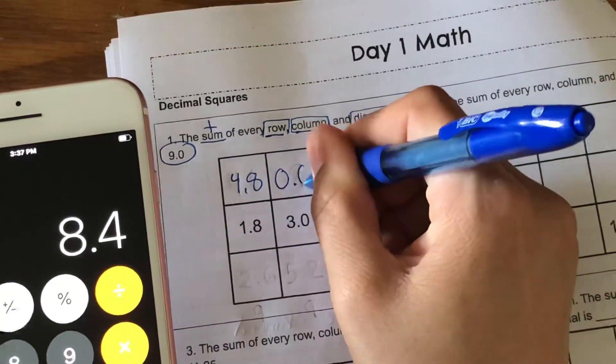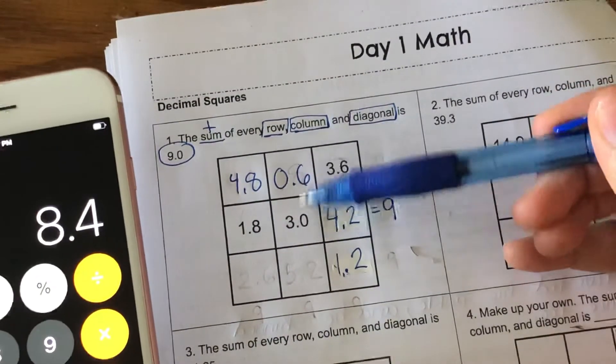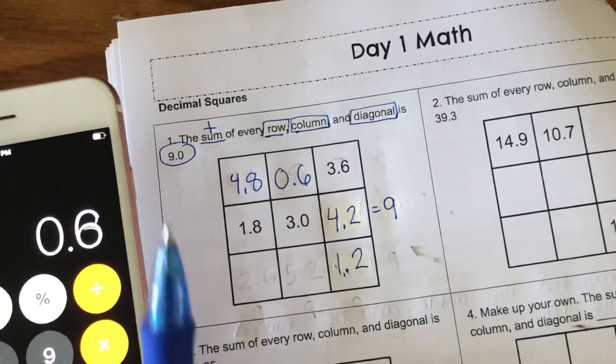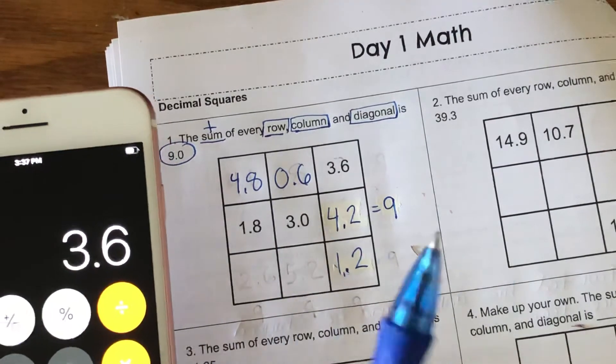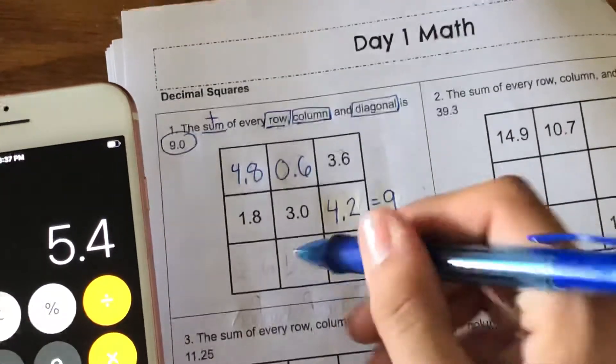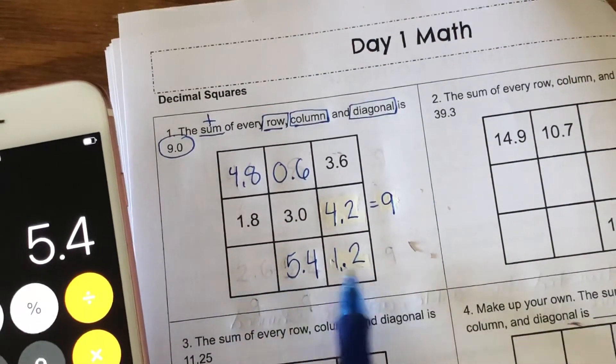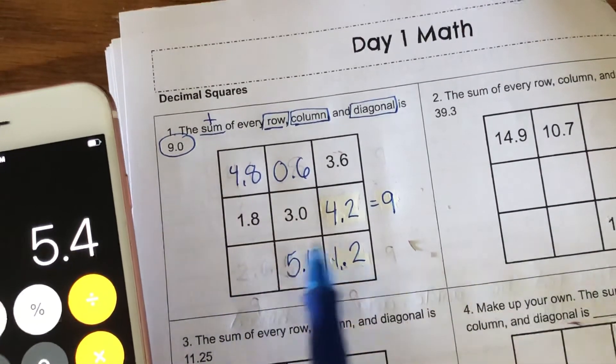Now I just have two boxes to complete, but I'm gonna go down this way first. 0.6 plus 3.0 is 3.6. When I take away this from 9, I get 5.4.